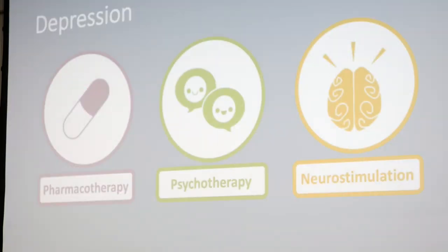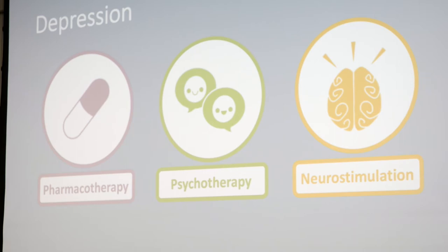What might be surprising is that this isn't the result of not having effective treatments for depression — there are actually a lot of effective treatments that do exist. We have different pharmacotherapies, medications like SSRIs (selective serotonin reuptake inhibitors), different types of psychotherapy such as cognitive behavioral therapy, and also different types of neural stimulation like repetitive transcranial magnetic stimulation. The problem isn't that we don't have treatments — it's that we don't know which treatment is going to work for our patients.